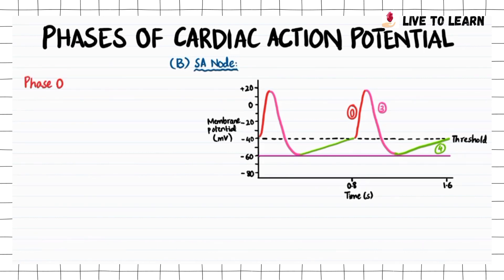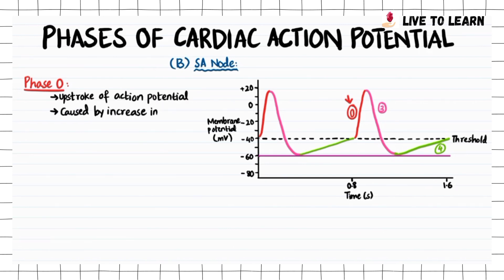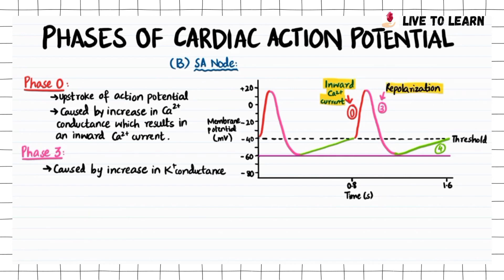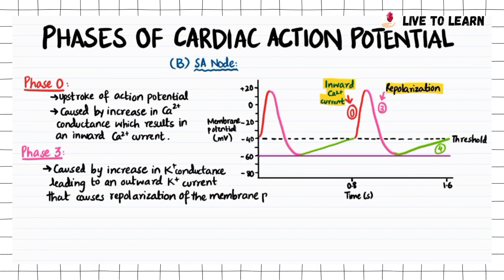Now let's take a look at what the action potential in the SA node looks like. Phase 0, the part shown in red on the graph, represents the upstroke of the action potential. It is caused by an increase in calcium conductance, which results in an inward calcium current. Phase 3, the part shown in pink on the graph, represents a period of repolarization. It is caused by an increase in potassium conductance, leading to an outward potassium current that causes repolarization of the membrane potential.